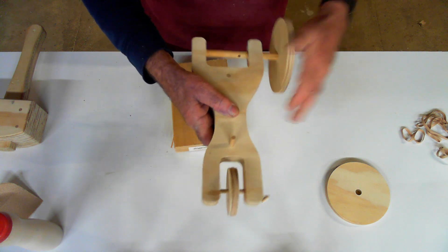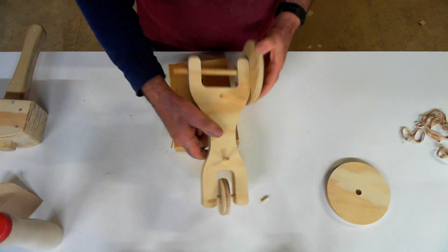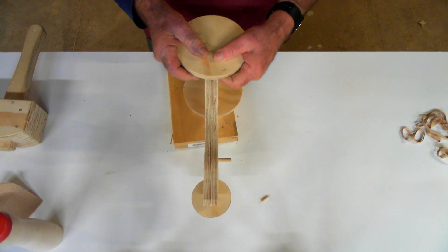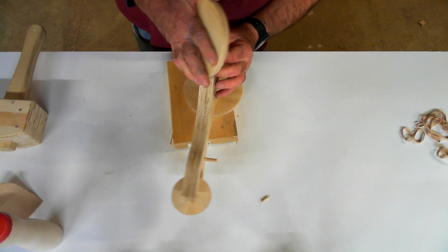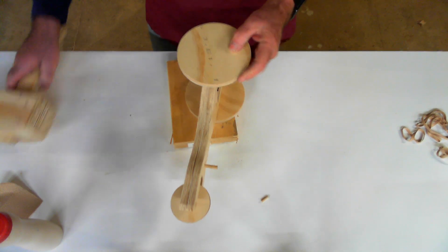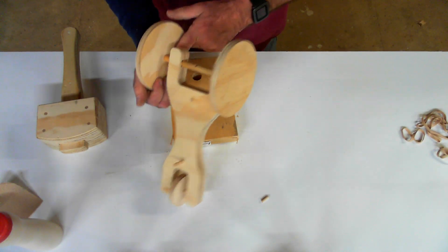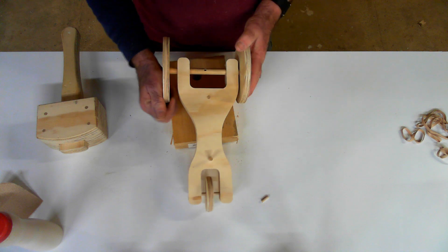Stand it up, put the other wheel on, line up the pocket. If your dowels fit good, you don't need to put any glue in here. But if you want to, you can put a little bit of glue in that pocket before you put it together.